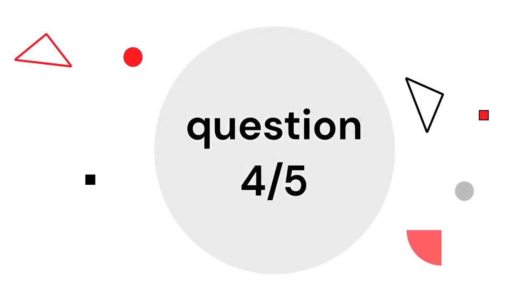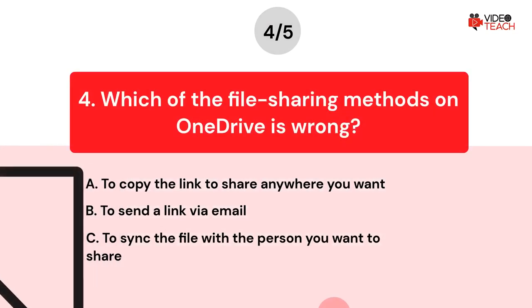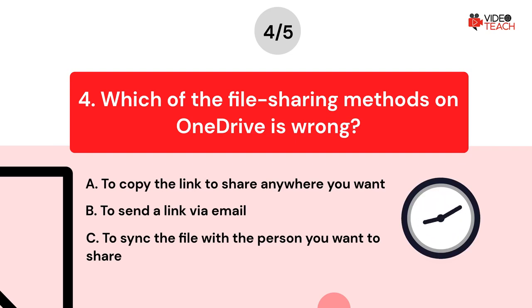Question number four. Which of the file sharing methods on OneDrive is wrong? Option A: To copy the link to share anywhere you want. Option B: To send a link via email. Option C: To sync the file with the person you want to share. Now you have about 15 seconds to think about your answer.